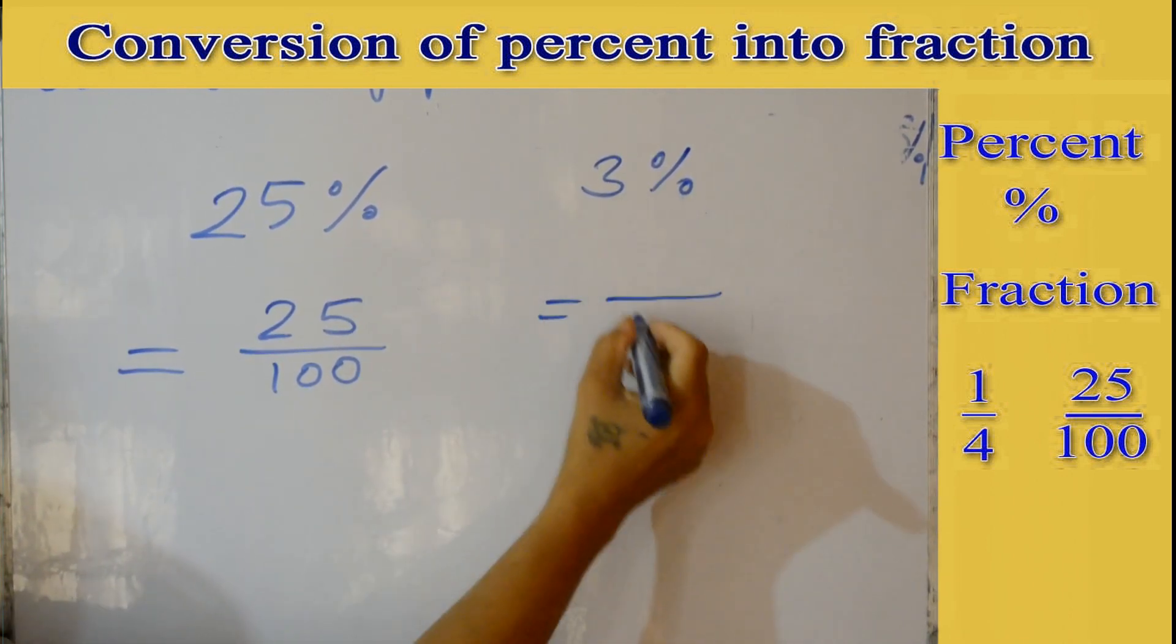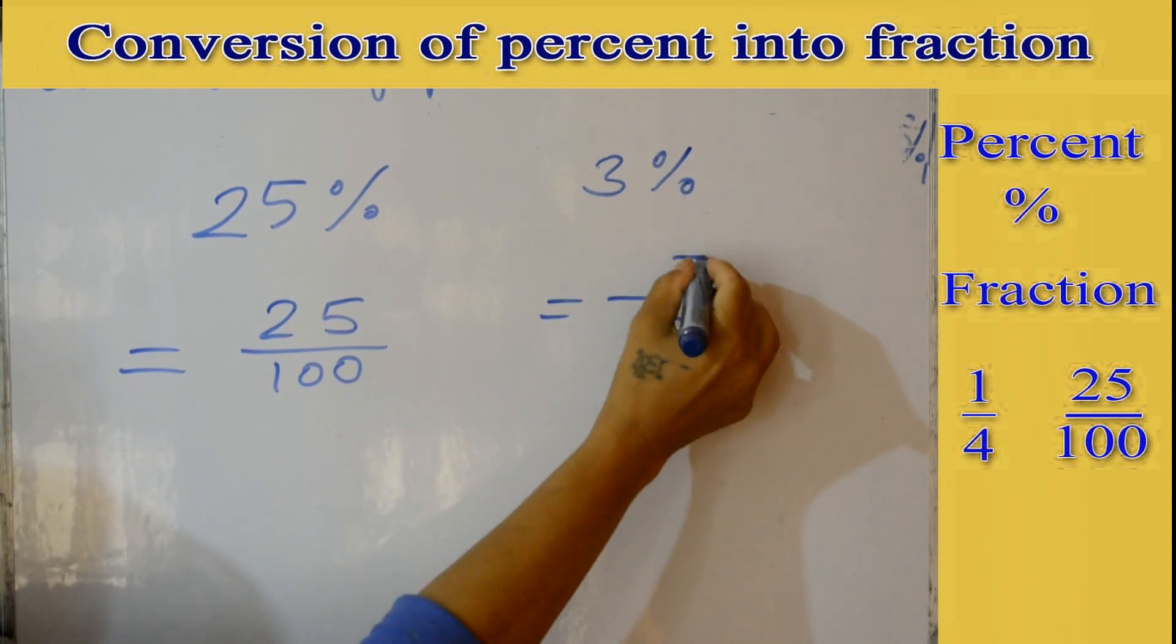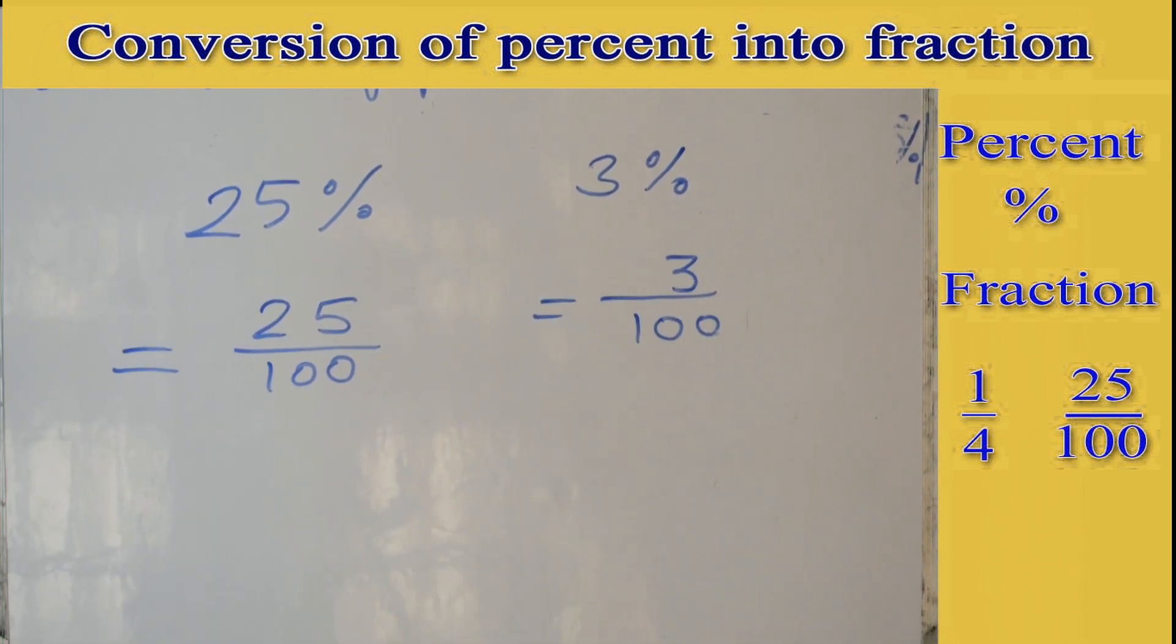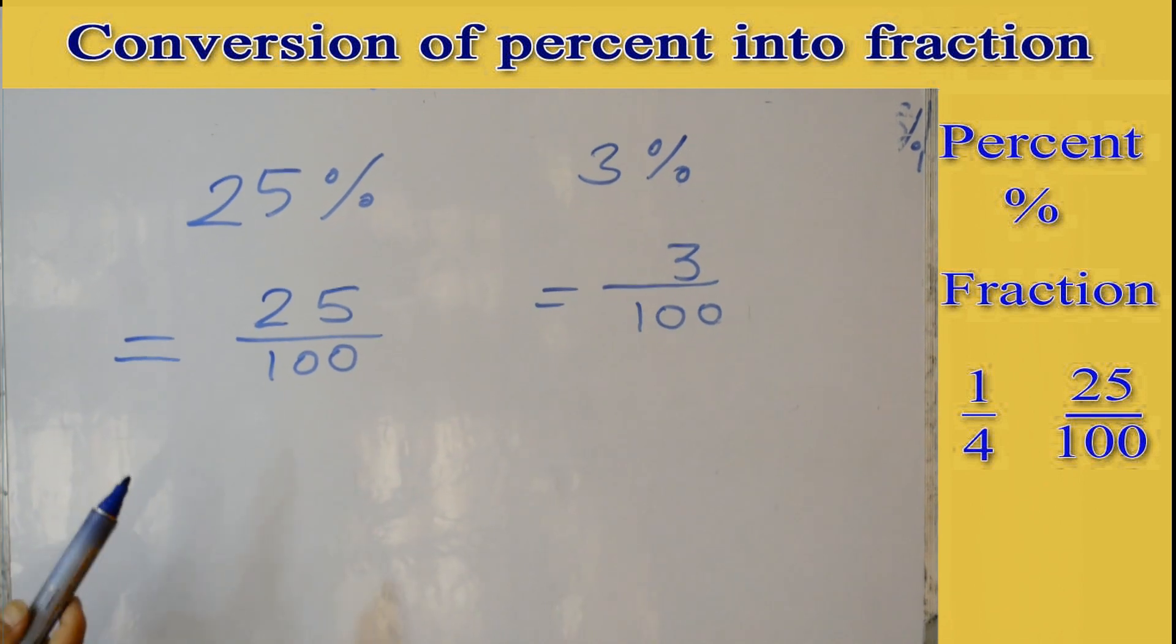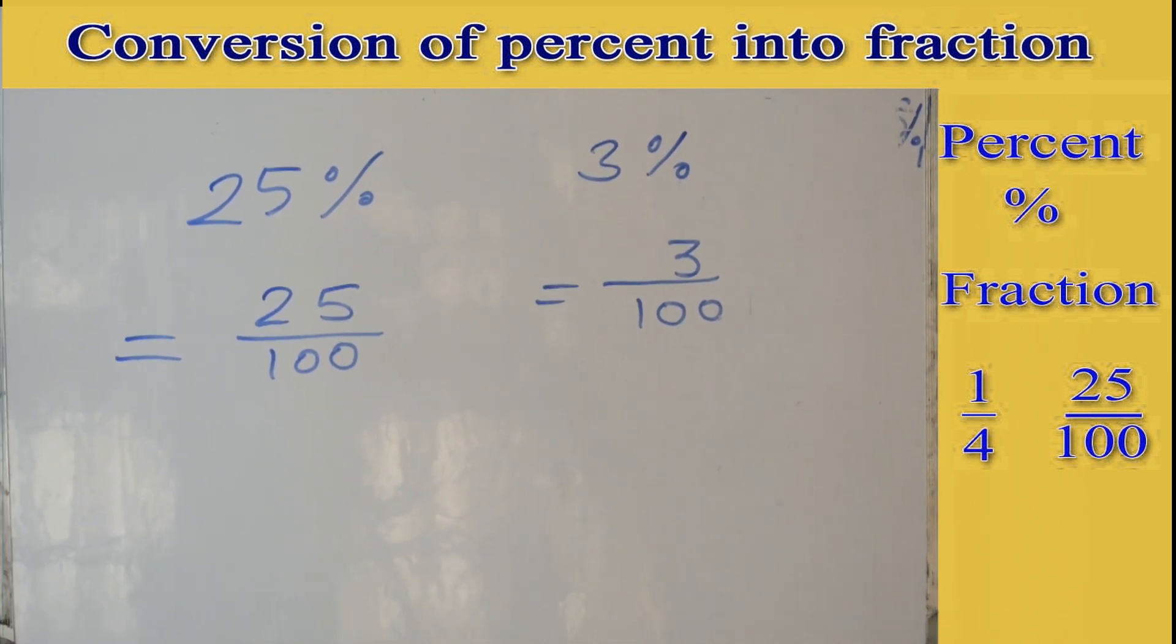3 out of 100, so 3/100. We always have denominator 100 there.